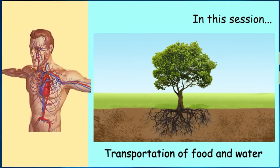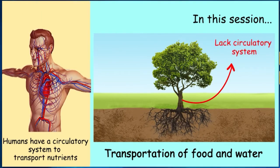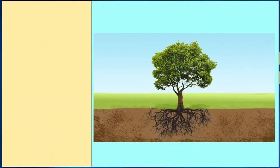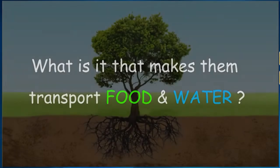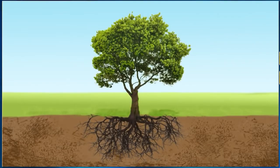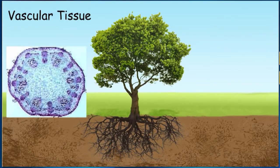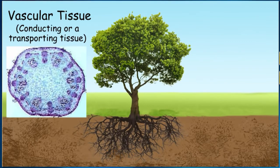But unlike humans and animals, plants lack a circulatory system — like blood, veins, or arteries — to provide all the nutrients to its parts. So what makes them transport food and water to the entire plant body? They have a specialized form of tissue to carry out this function called the vascular tissue, which is nothing but a conducting or transporting tissue.